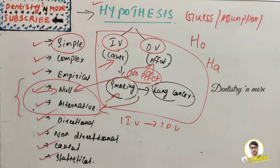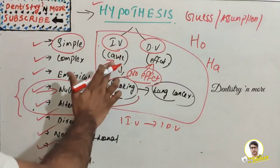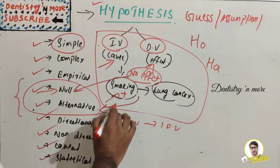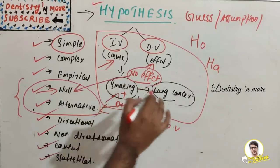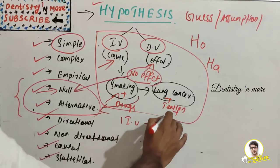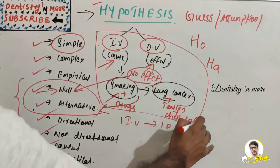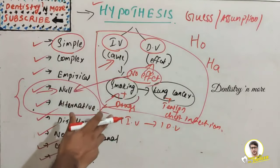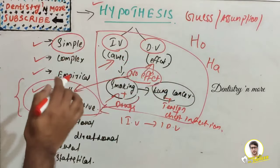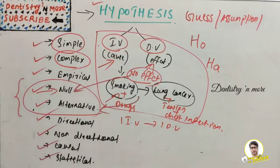Complex hypothesis, as the name suggests, is more complex because it involves more than one independent and more than one dependent variable. For example: smoking and drug use lead to lung cancer, tension, and chest infection. Here, smoking and drugs are more than one independent variable, and lung cancer, tension, and chest infection are more than one dependent variable — making it a complex hypothesis.